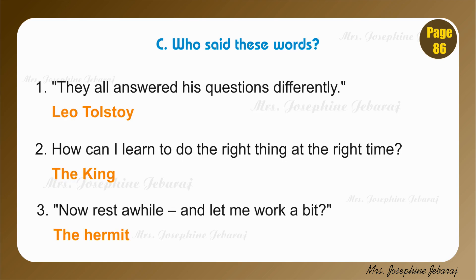Moving to C. Who said these words? This question can also be asked as identify the speaker or character. Number 1. They all answered his questions differently. This sentence was said by the author Leo Tolstoy. The word 'they' refers to all the learned men in the kingdom, and 'his questions' refers to the king's questions. Number 2. How can I learn to do the right thing at the right time? This was a question asked by the king himself. So the answer is: the king.